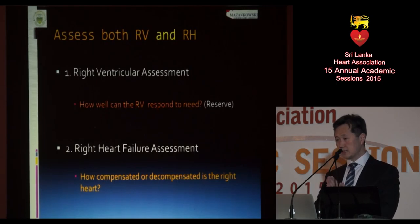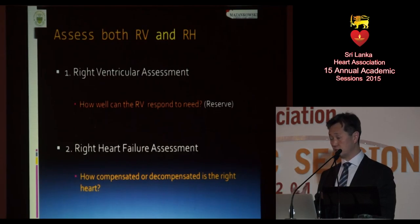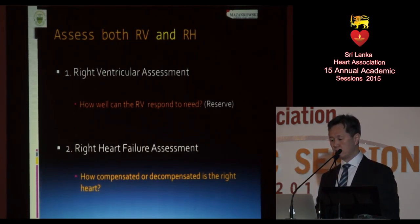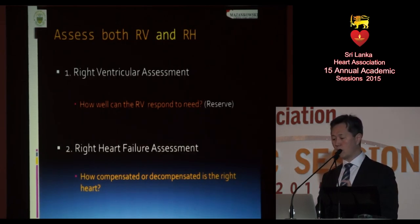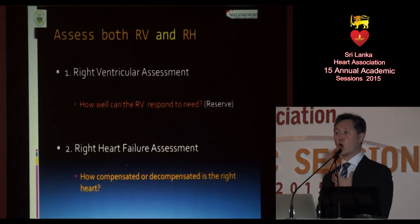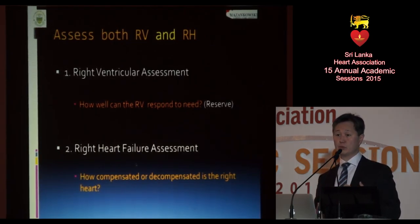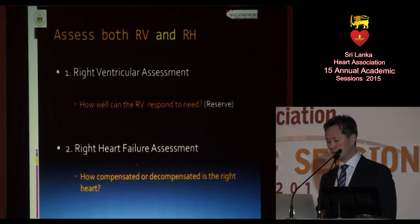When assessing the RV, you must assess the right side as a totality. Two key questions: From a ventricular assessment — how well can the right ventricle respond to need, i.e., what is the reserve? And second — how compensated is the patient? This is the right heart failure assessment. These two questions need to be addressed for everyone who comes through your door.